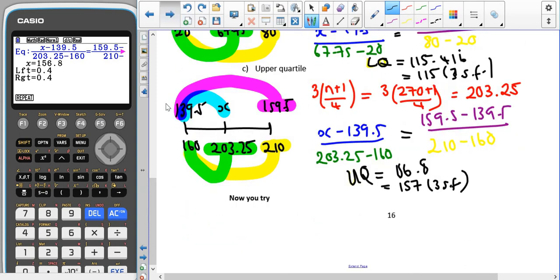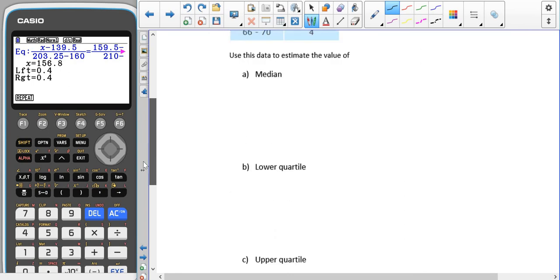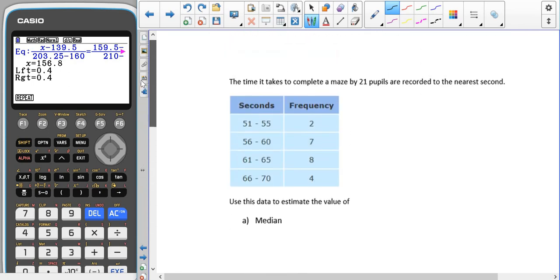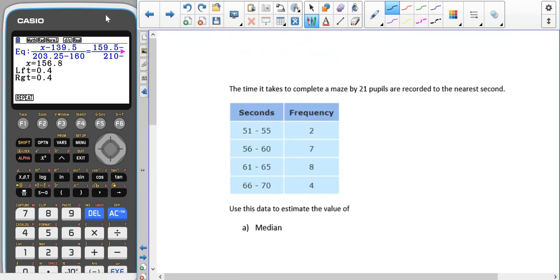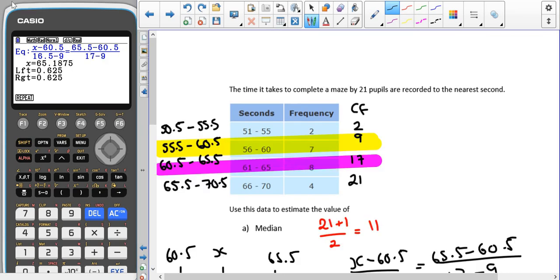So I'd like you to pause the video and give the now you try a go. Again, looking for the median, the lower quartile, and the upper quartile. So hopefully you paused the video and gave the now you try a go. As you can see, the first step again is to change the bounds. Because we can see here 55 is not the same as 56, so we have to go halfway. And then remember to do the same with the beginning and the end of the values, as long as it still makes sense to do so. Also, adding on a cumulative frequency to the right hand side of the table.